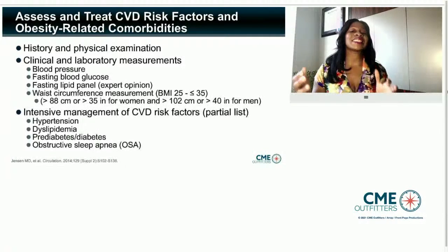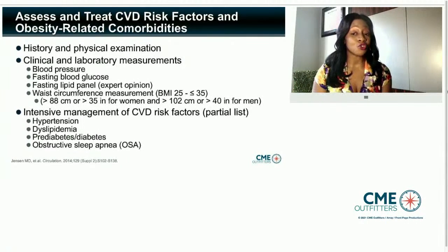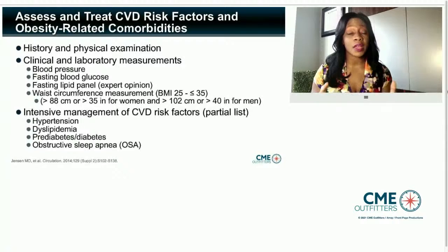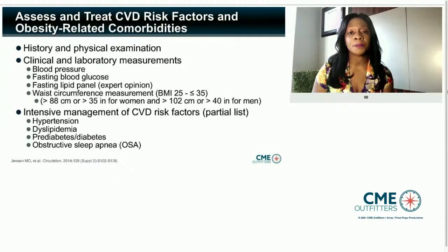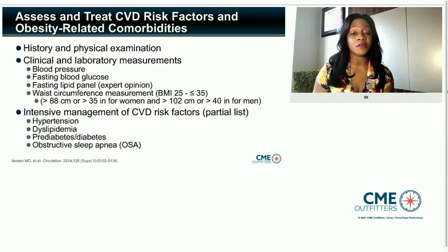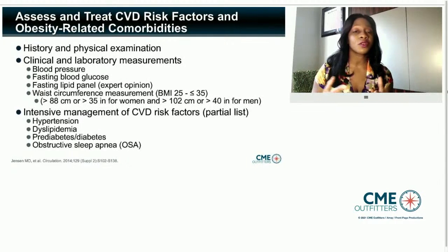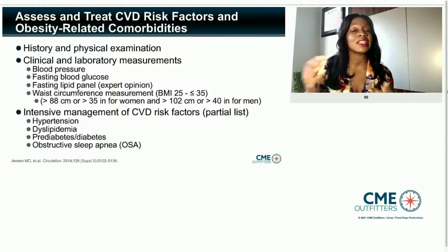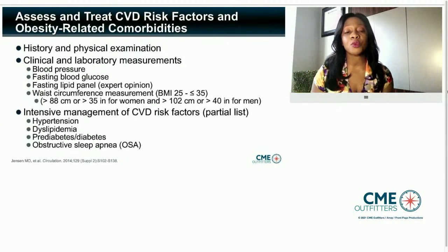It's important to assess and treat cardiovascular disease risk factors using history and physical exams. Clinical and laboratory measurements are key: blood pressure, fasting blood glucose, a fasting lipid panel based on expert opinion, and waist circumference. Our typical waist circumference target — particularly for non-Hispanic white women — is less than 35 inches for women and less than 40 inches for men, measured at the widest portion at the umbilicus.